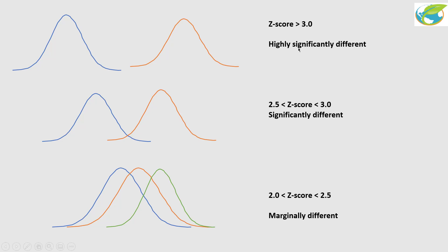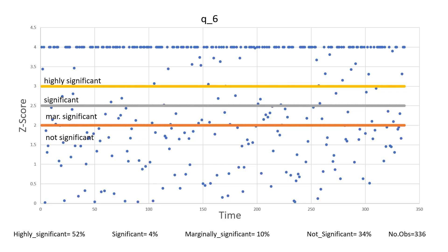If the z-score is between two and two-and-a-half, then your model result is marginally significant. If it is very close to zero, it's not significant at all. When you run the model, this is what you get. You have time on the x-axis and z-score on the y-axis, and this is my space — that's the discharge at sub-basin number three. I put everything above three as highly significant. In order to be able to plot it, I set everything more than three-and-a-half equal to four.